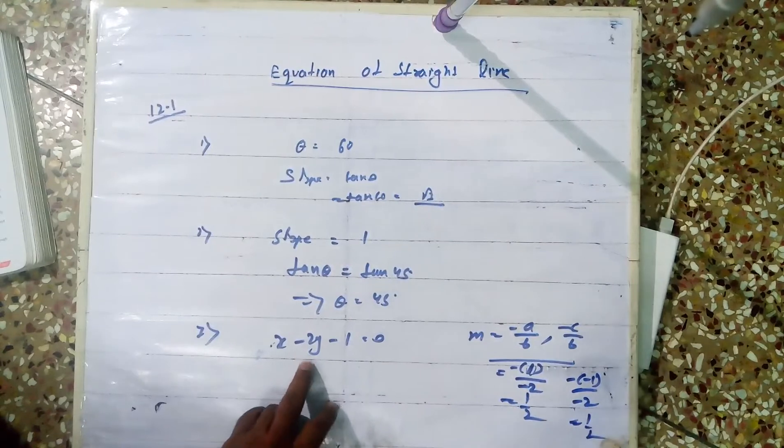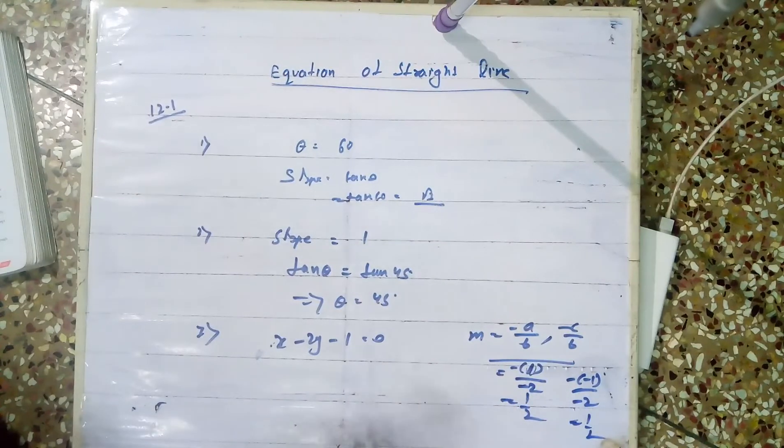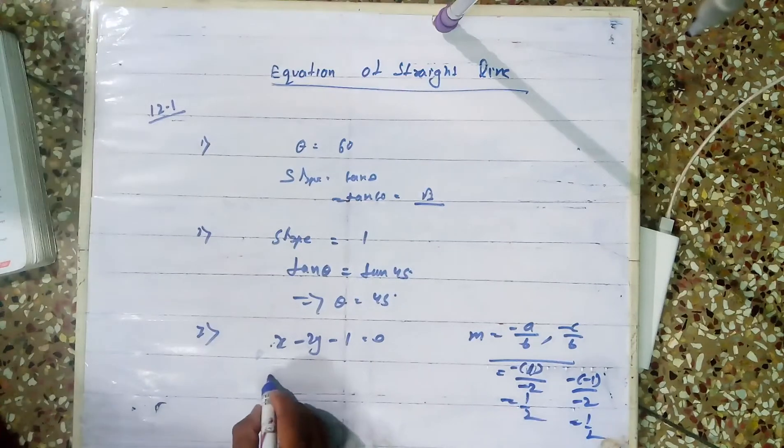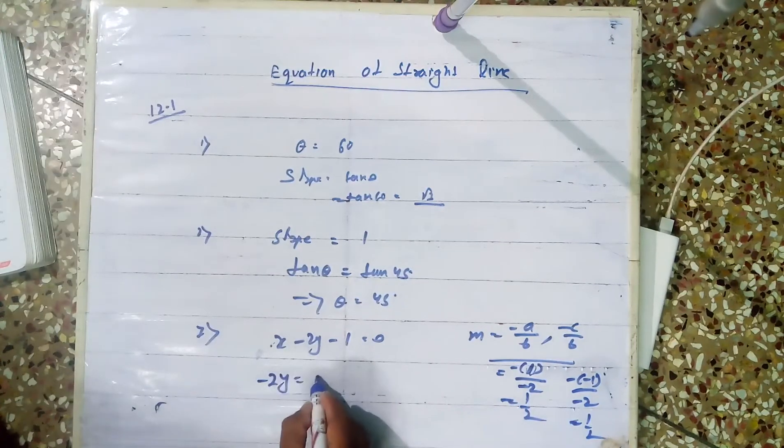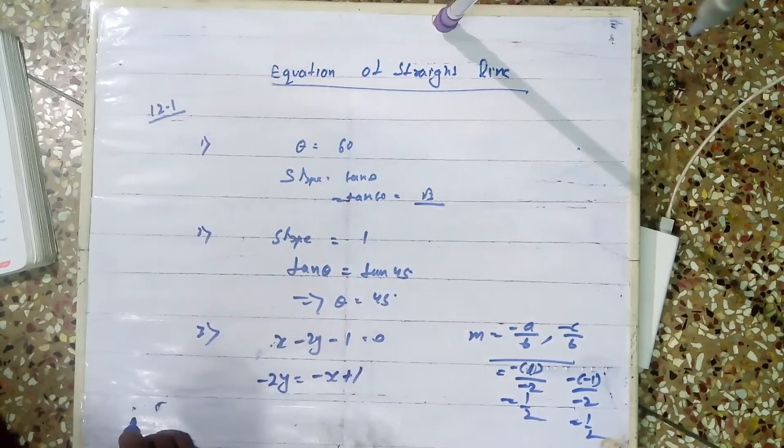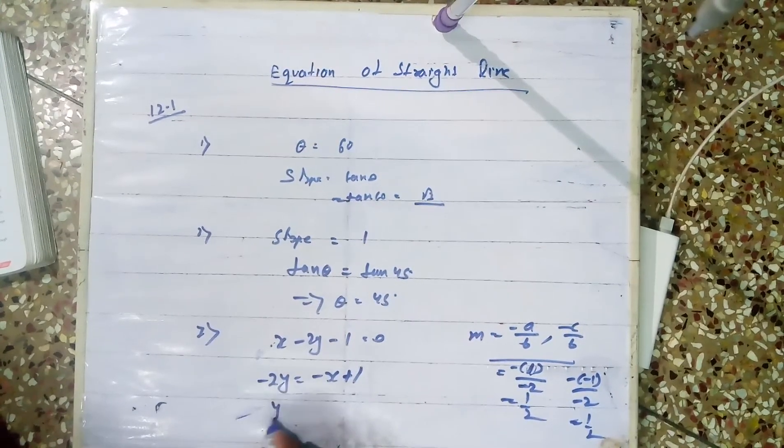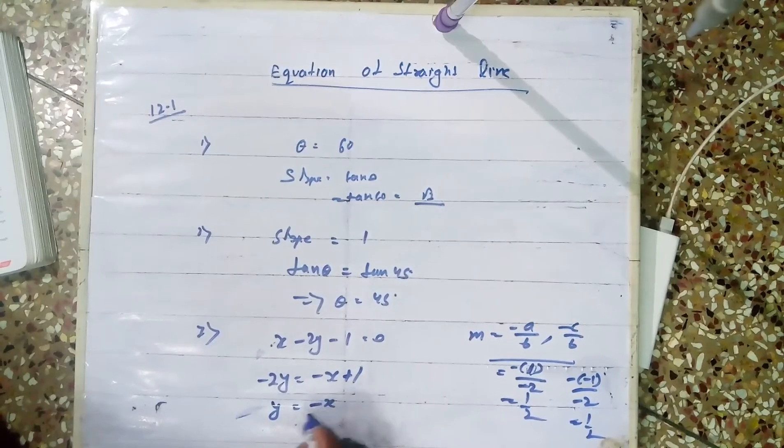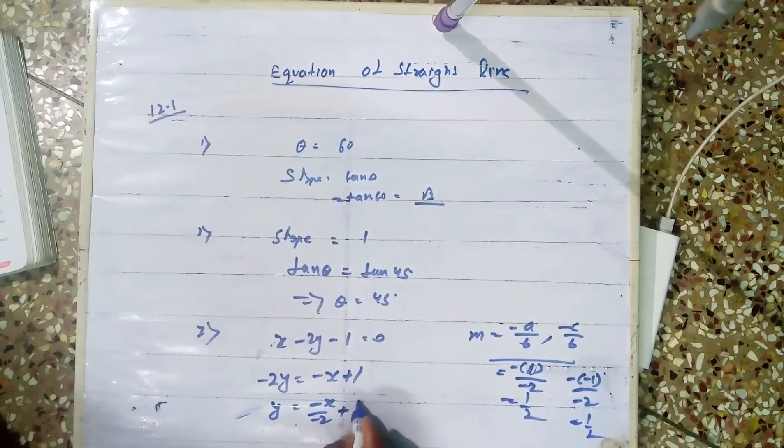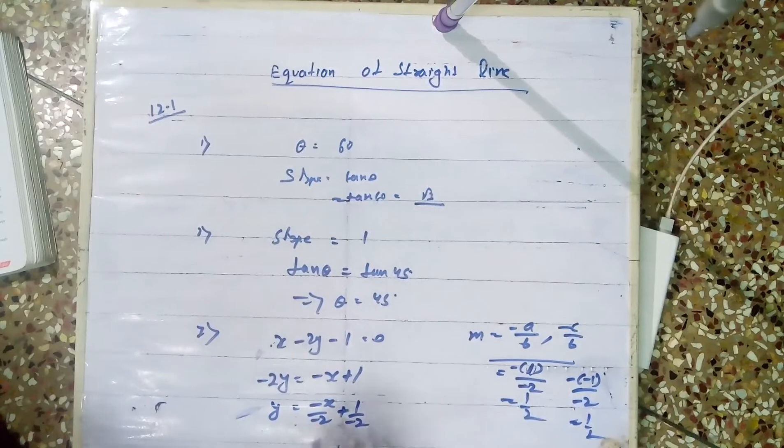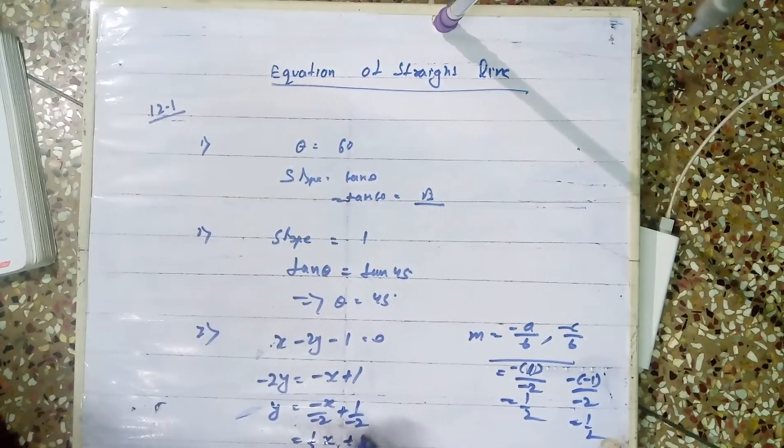Let's check this. If we do the procedure: -2y equals -2x plus 1. So y equals x by -2 plus 1 by -2. This can be arranged as y equals (1/2)x plus (-1/2), or y equals (1/2)x minus 1/2.